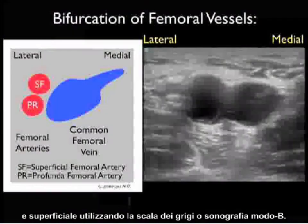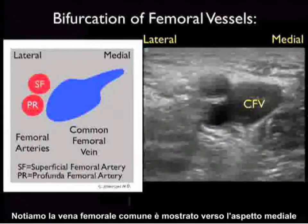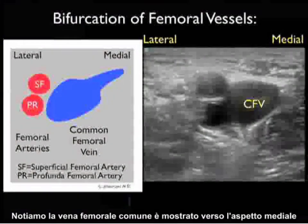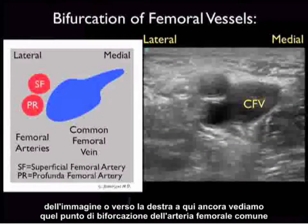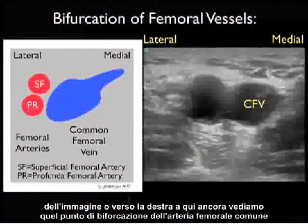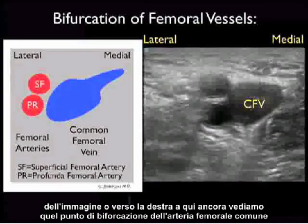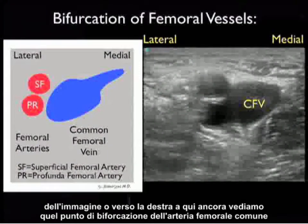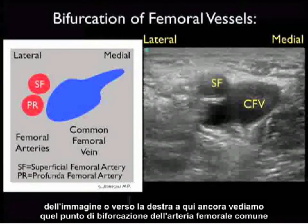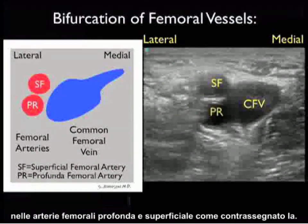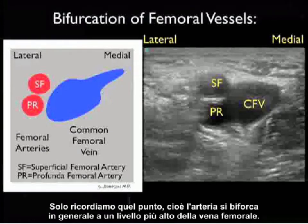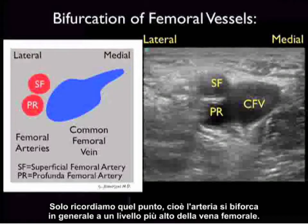In this video clip we note the bifurcation of the common femoral artery into superficial and profundus femoral arteries using grayscale or B-mode sonography. The common femoral vein is shown towards the medial aspect of the image, and here again we see that bifurcation point of the common femoral artery into the superficial and profundus femoral arteries. We remember that the artery generally bifurcates at a level higher than the femoral vein.